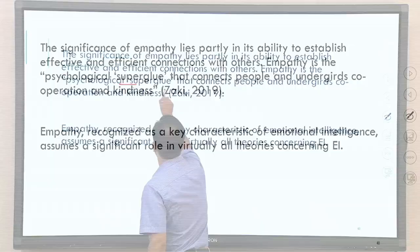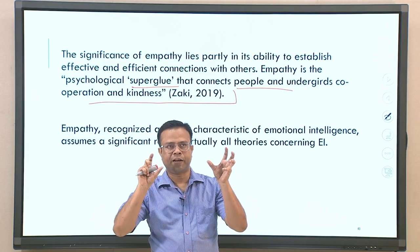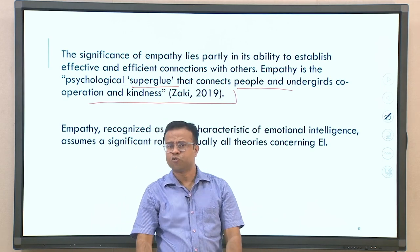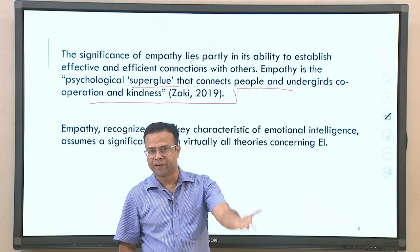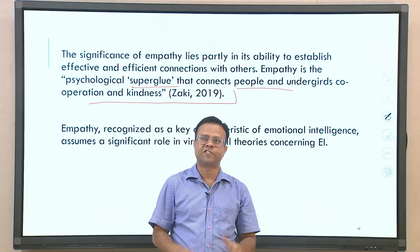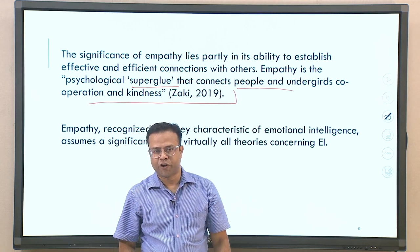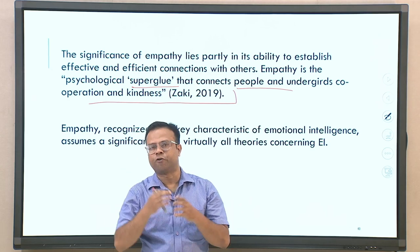Empathy is a kind of psychological superglue that connects people and undergirds cooperation and kindness. It is because of empathy that we show kindness to other individuals, are concerned about others' well-being, and bond with each other to form communities and societies. All these typical human social aspects are basically results of empathy. Without empathy we would not be able to connect with other individuals in a deeper sense. Empathy is recognized as a key characteristic of emotional intelligence — all theories talk about it.